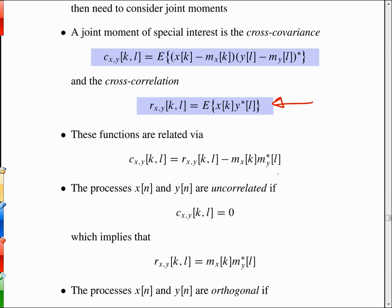The definitions that apply when you have two different processes are similar to those for a single process, except now they're cross correlations as opposed to auto. So auto is self and cross is between two processes.